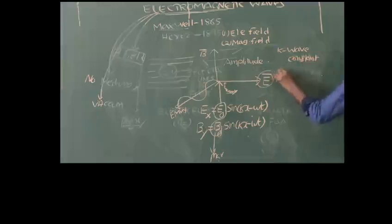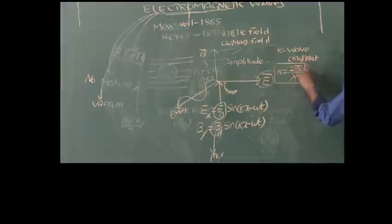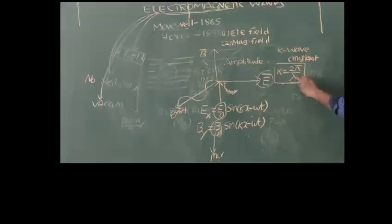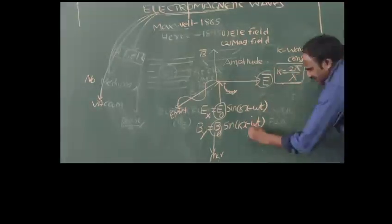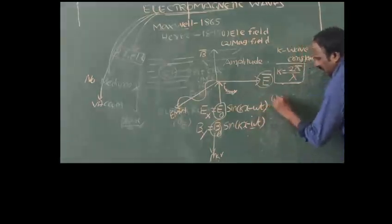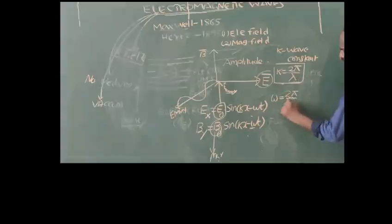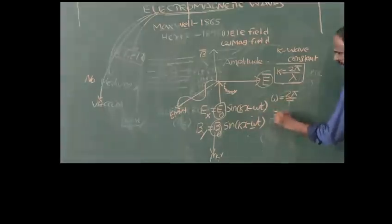The formula for the wave constant k is k = 2π/λ, where λ is the wavelength. And omega ω is called angular velocity, whose formula is 2πf, where f is the frequency.